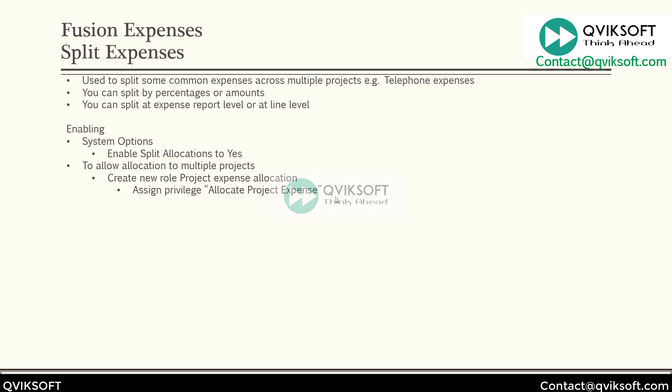You can create a skeleton role and assign this privilege — Allocate Project Expense — then save that role and assign it only to the users to whom you want to give that particular privilege.